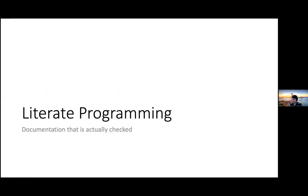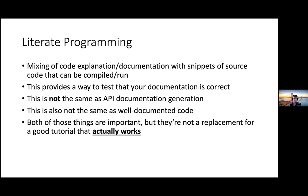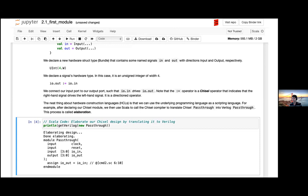Now I want to talk about CI for your documentation. This comes from a concept called literate programming — a mix of documentation with explanation so your documentation is actually run and checked. It's a really good way to check that documentation is current. It's not the same as API documentation or writing comments in your code. This is really great for tutorials because it makes sure your tutorial works. Jupyter Notebooks are a great thing for tutorials — there's a reason they're getting so popular. But there are other ways to do it.